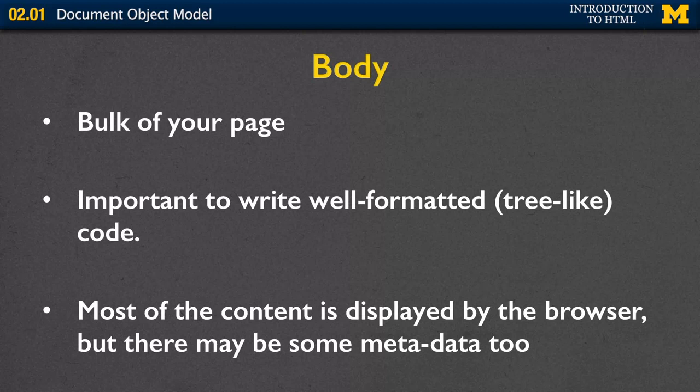What people do see is the information in your body tag. That body tag is the bulk of your page, so it's very important to write well-formatted or tree-like code where you're making sure that every tag has an end and that you're not putting tags in weird orders. Most of the content in the body is displayed by the browser, but every once in a while there's a little bit of metadata in there too.